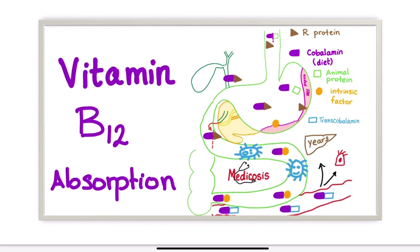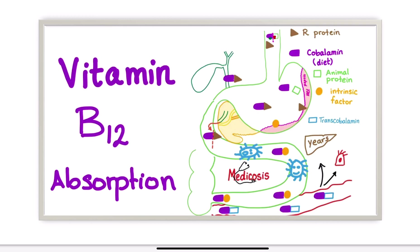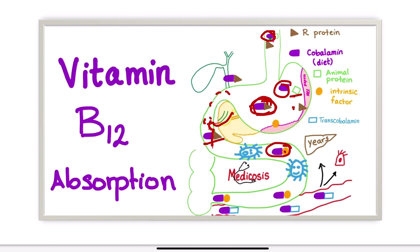Now let's look at vitamin B12. When we eat, B12 enters through the diet and goes into the stomach. Here, the intrinsic factor of Castle binds with B12. But first, another important factor — the R protein — also binds with B12 in the stomach, and B12 travels down bound to R protein. When it reaches the pancreatic area, secretions from the pancreas act on this complex.